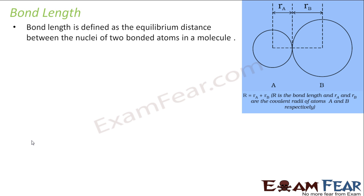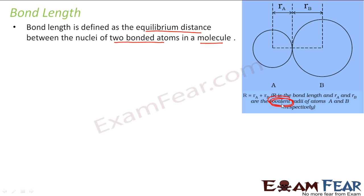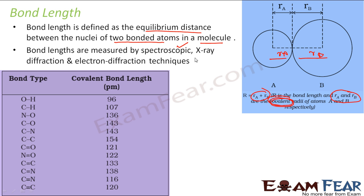So let us start with bond length. Bond length is nothing but the equilibrium distance between two bonded atoms in a molecule. One molecule has n number of bonds. If the covalent radii of the two atoms are rA and rB, then the bond length is rA plus rB. Bond length can be found using spectroscopic methods, x-ray diffraction, and electron diffraction — various techniques from the physics world.